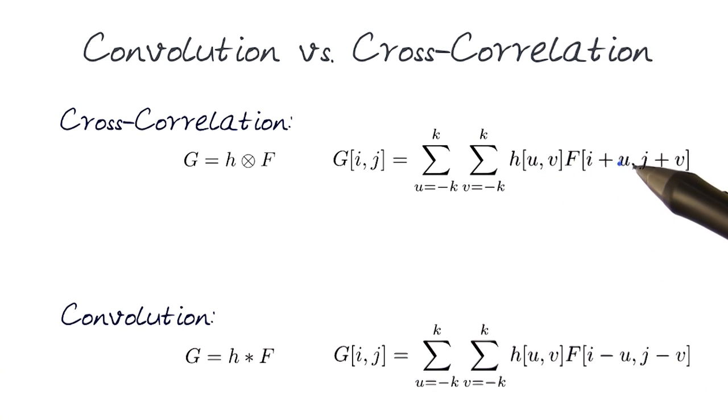So notice between the two formulations of cross-correlation and convolution, there is one difference here. There is a plus index here and a minus index here. What does that mean? This is our kernel. We've been playing around with this kernel all the time. Let's actually play around with it a little bit more to understand the differences between cross-correlation and convolution.